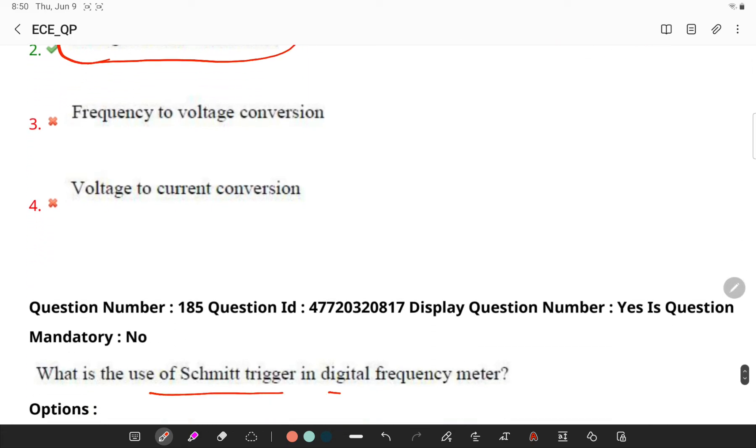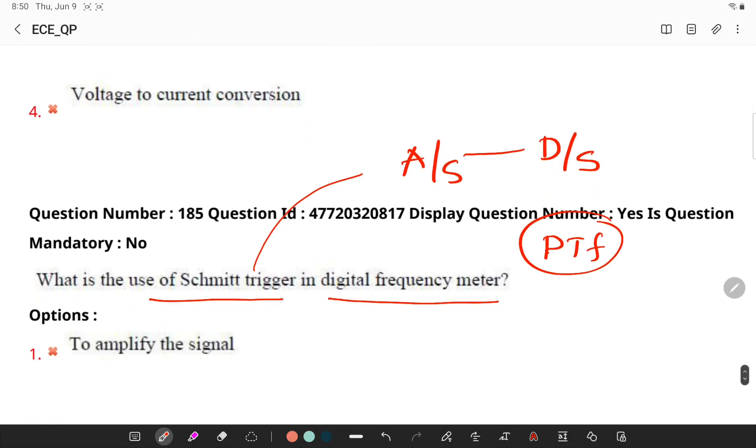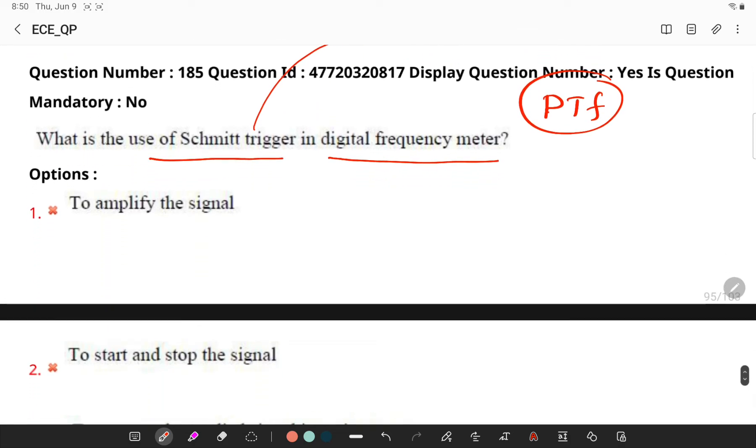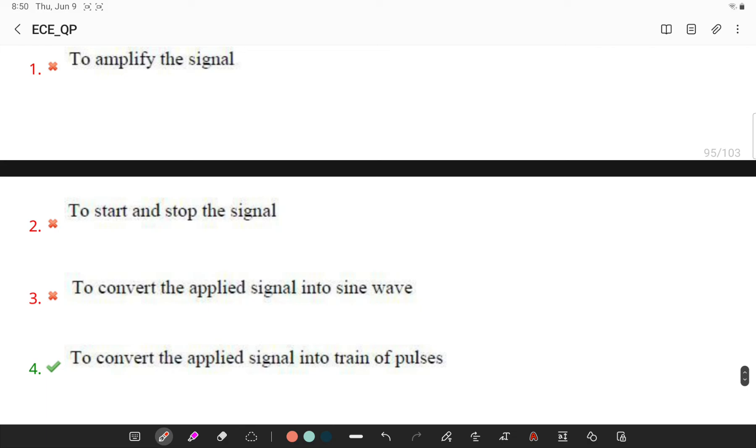What is the use of Schmitt trigger in digital frequency meter? So the main purpose of a Schmitt trigger is to convert an analog signal into a digital signal in a pulse train form, and it is also known as A to D circuit which basically acts as a comparator circuit. So it converts the signal into a train of pulses.